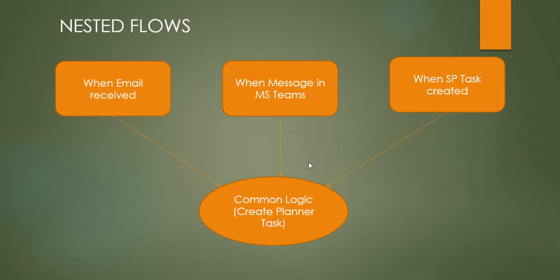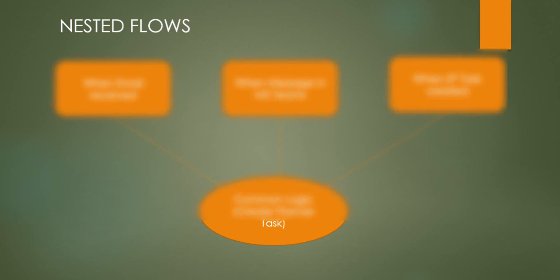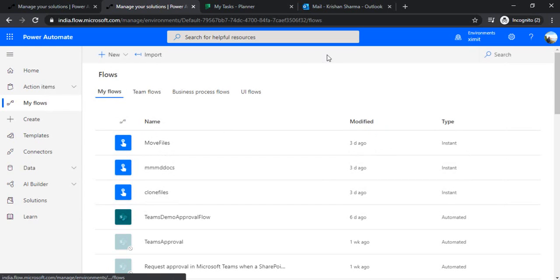In that case we will be creating these three parent flows and one child flow, which would have the logic or the actions to create the Planner task. This is how we are going to create the nested flows. I'm jumping to flow.microsoft.com so I can show you the entire demo.